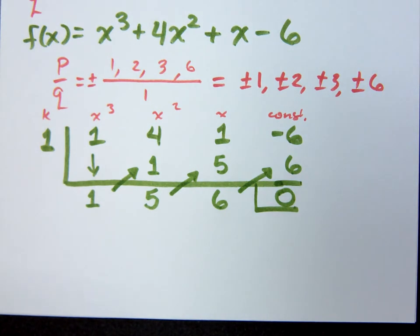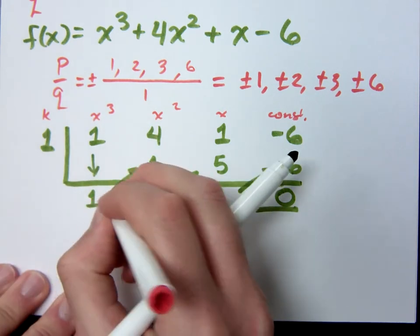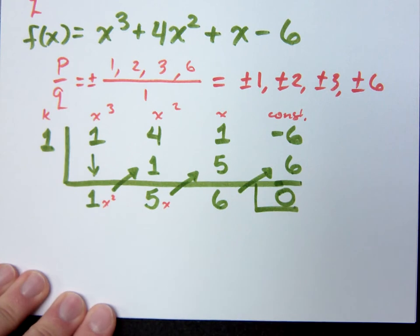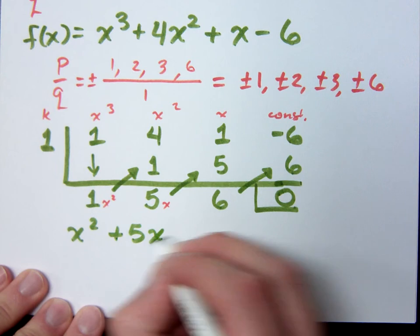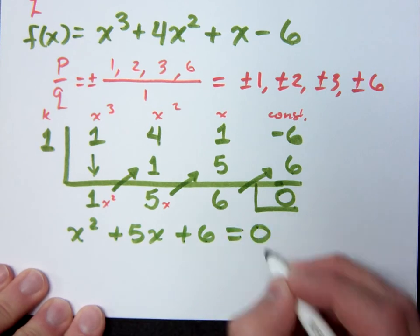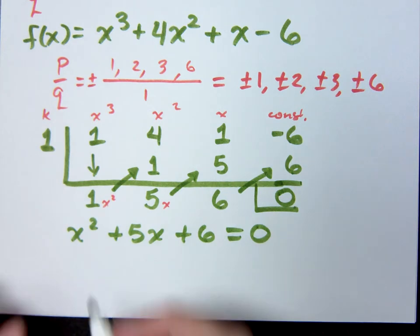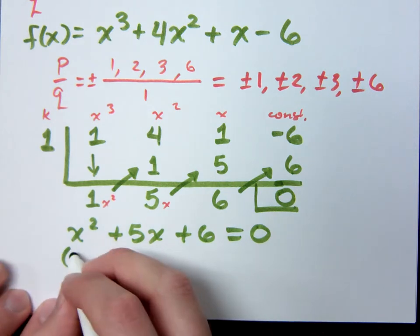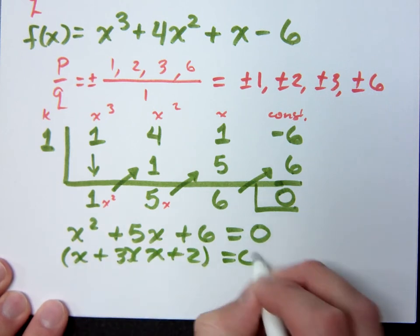How many zeros did I expect here? 3. How many have I found? 1. Which means if I took that guy out, my guy that starts as x to the 3rd is now in the form x squared. So if I take this guy that's remaining, x squared plus 5x plus 6, and I can set him equal to 0, can you solve that? How does it factor? x plus 3, x plus 2. So x equals negative 3 or x equals negative 2.